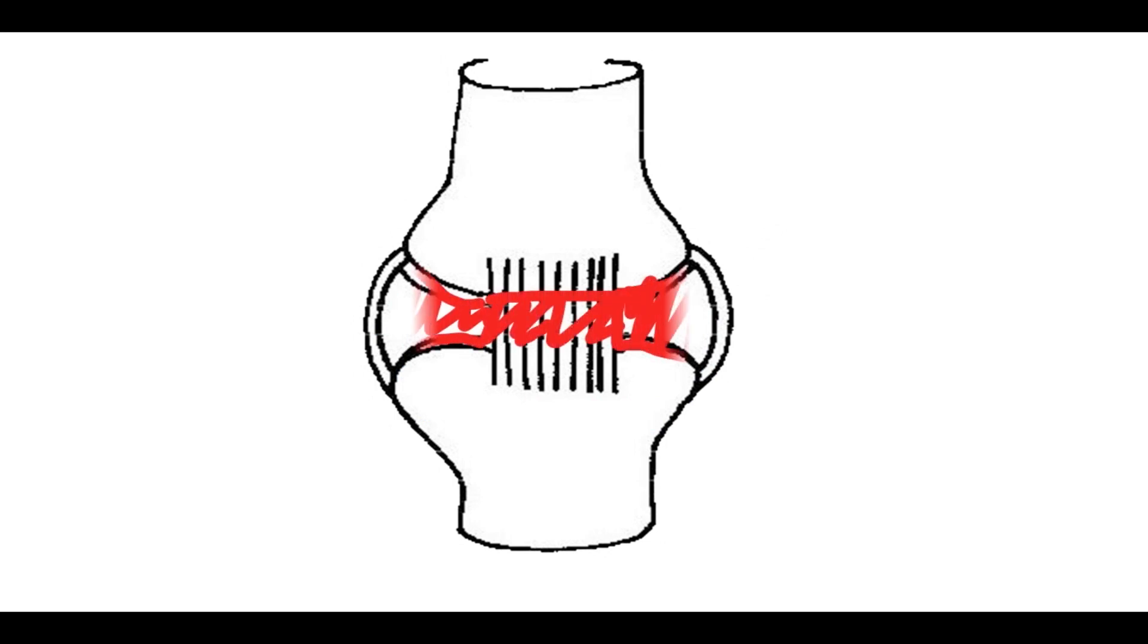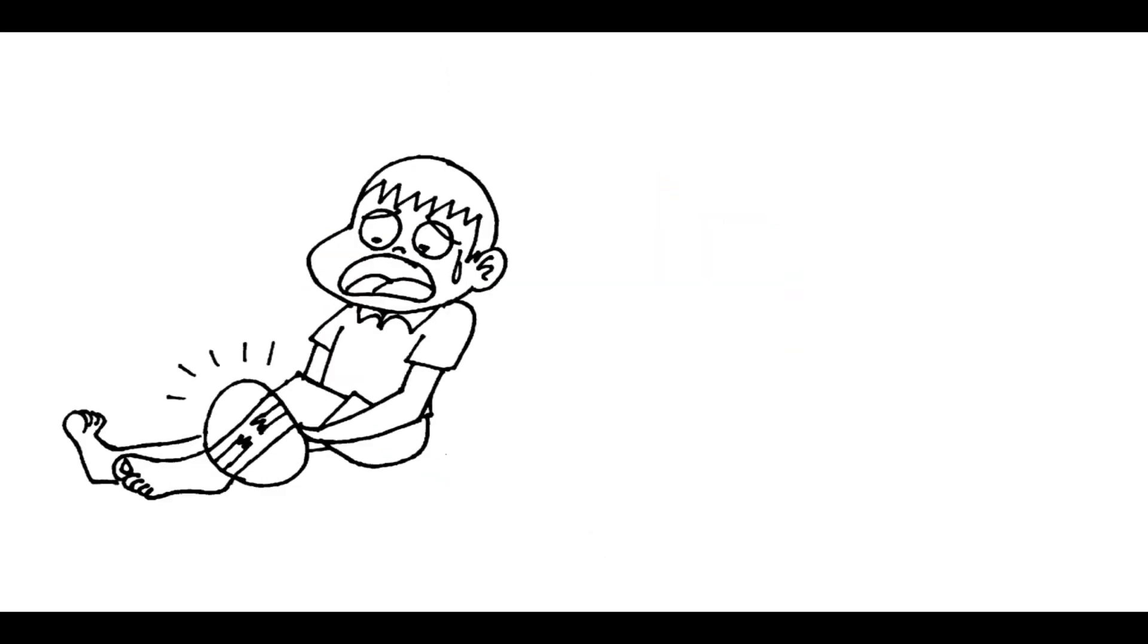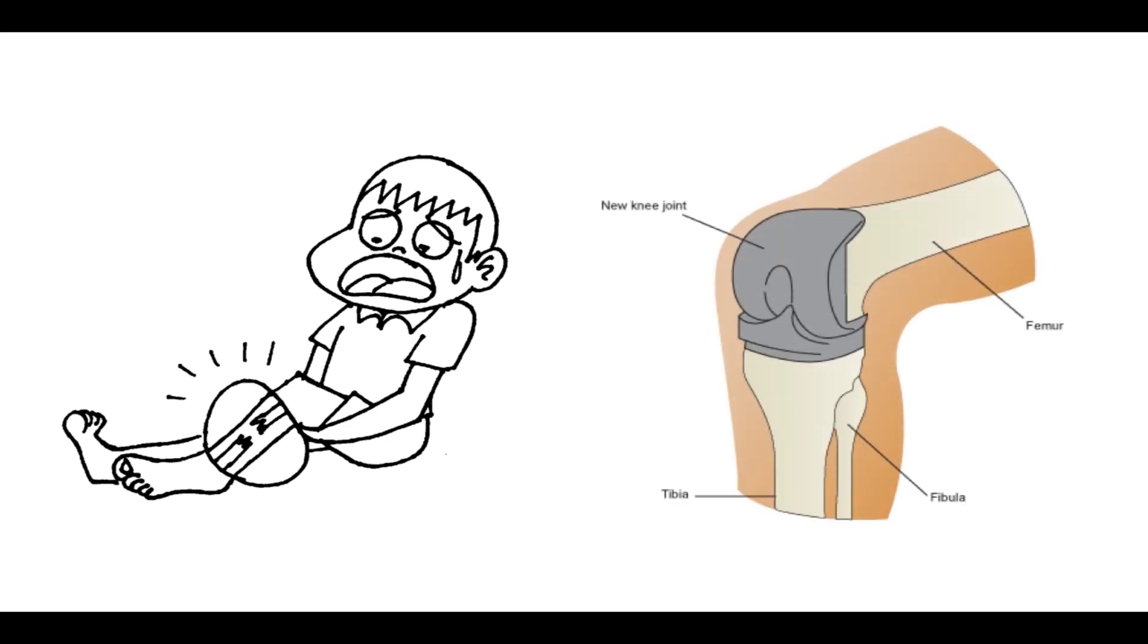In secondary TB arthritis, infection is acquired through direct inoculation of mycobacteria after a traumatic injury or a surgical procedure such as joint arthroplasty.